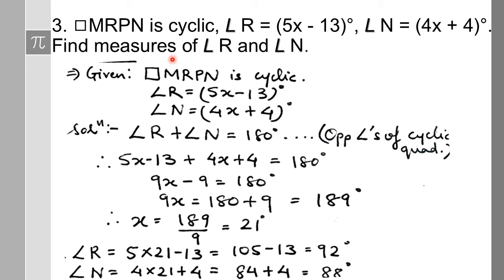This is the third question. Quadrilateral MRPN is cyclic; angle R is (5x − 13) degrees and angle N is (4x + 4) degrees. We need to find x, then find angle R and angle N. Since MRPN is cyclic, the cyclic quadrilateral theorem says opposite angles are supplementary. Here angle R and angle N are opposite angles, so angle R plus angle N equals 180 degrees.